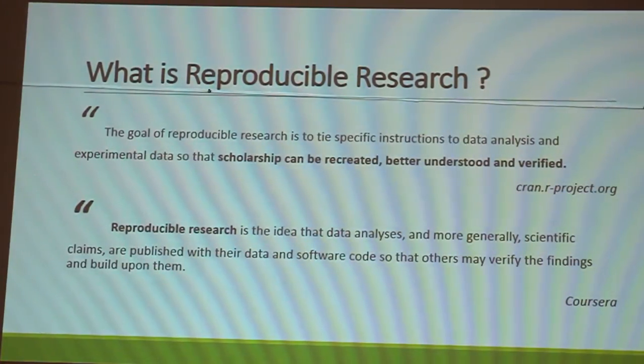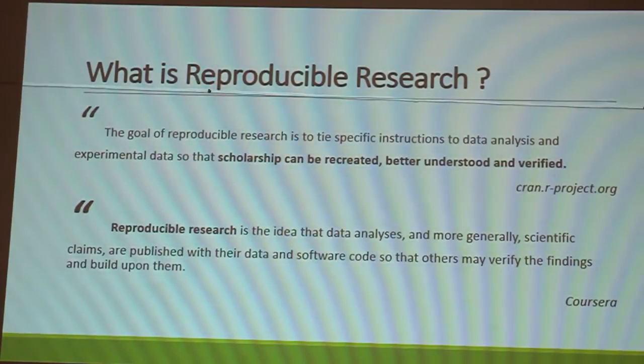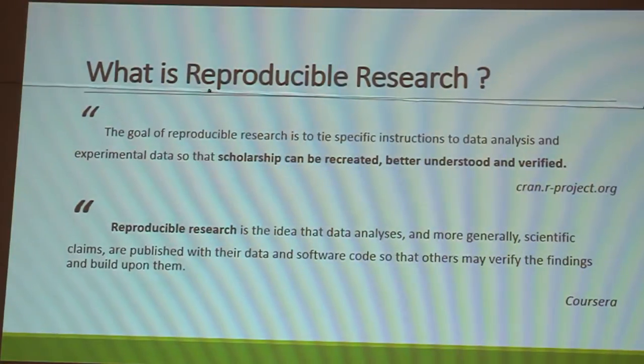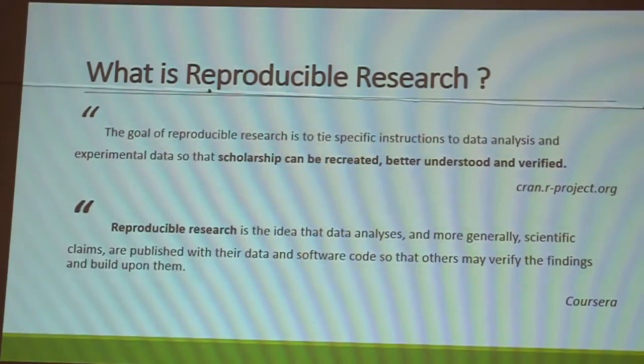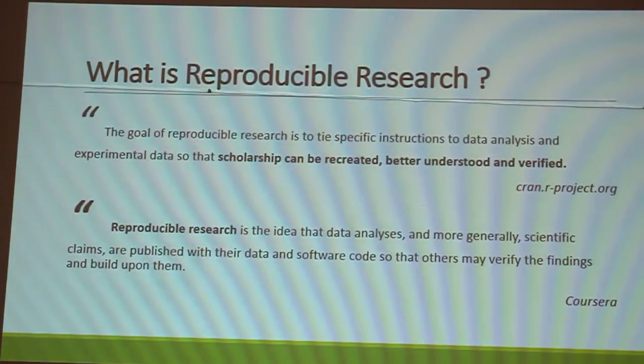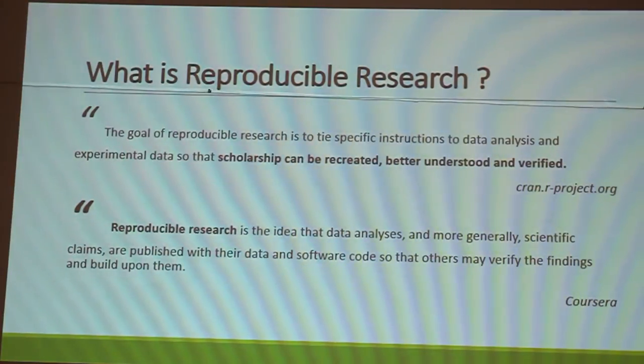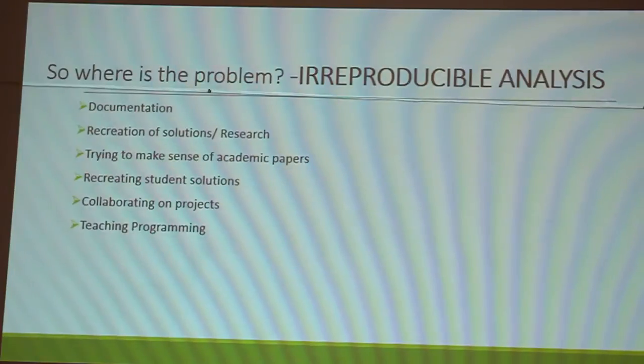Either given the same data or given different data, everything should be clearly laid out. So some of the definitions we have, this is from the R project. The goal of reproducible research is to tie specific instructions to data analysis and experimental data so that scholarship can be recreated, better understood, and verified. So imagine if you could just come and say, no, the earth is flat. How are people going to verify that? So your research has to be reproducible.